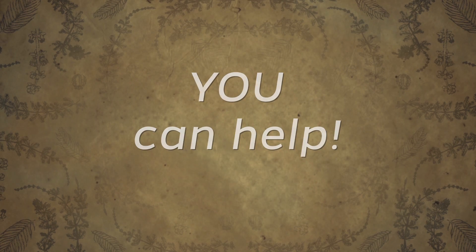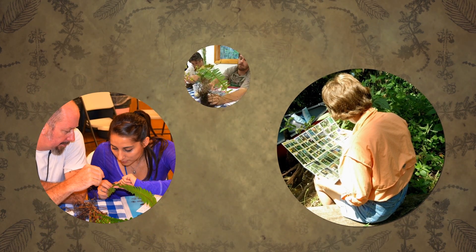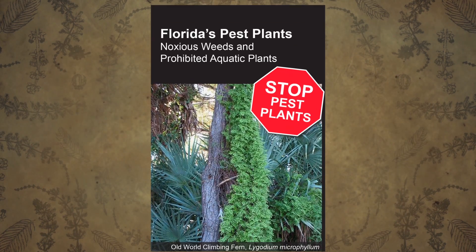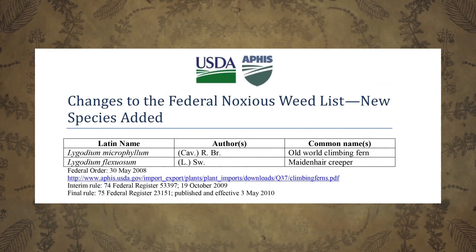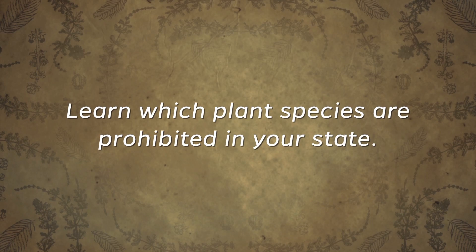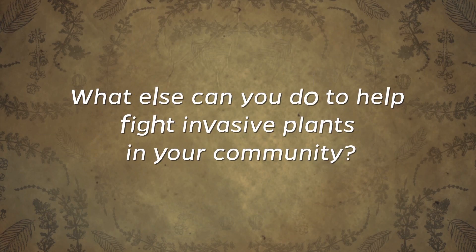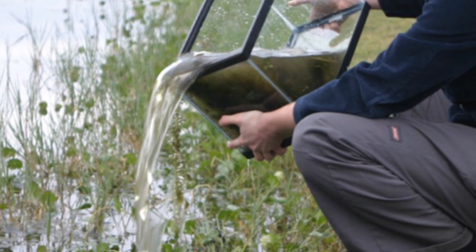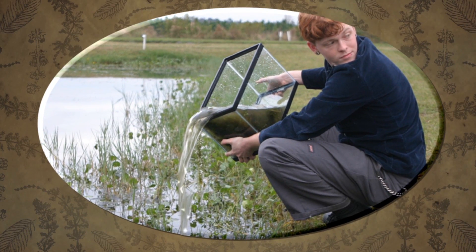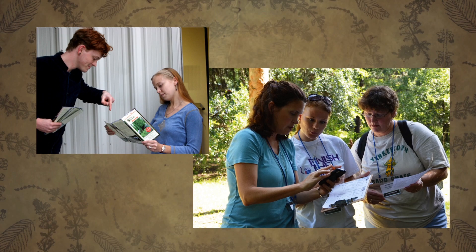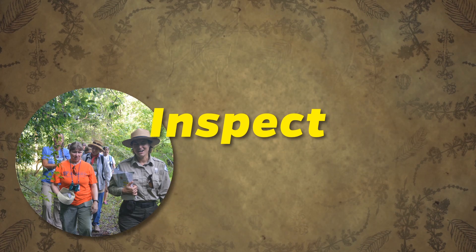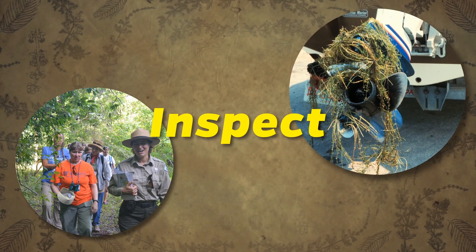You can help. Learn to identify the silent invaders causing problems in your area. Federal and state laws prohibit certain terrestrial and aquatic plants from being sold or purchased — learn what plant species are prohibited in your state. Never empty aquarium plants or fish into a lake, pond, or drainage ditch — they might be silent invaders. Tell family and neighbors about invasive plants and the problems they can cause. Inspect your yard, woods, garden, school, or boat for invasive plants.